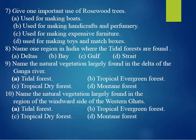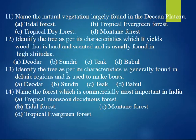Tenth question: name the natural vegetation largely found in the region of the windward side of the Western Ghats. The answer is B, tropical evergreen forest. Eleventh question: name the natural vegetation largely found in the Deccan plateau. The correct answer is tropical dry forest.